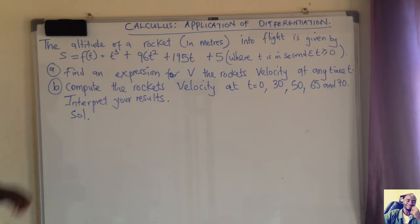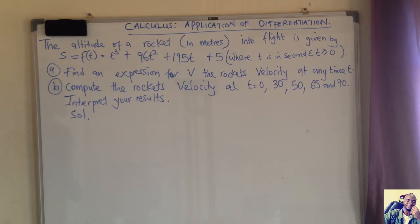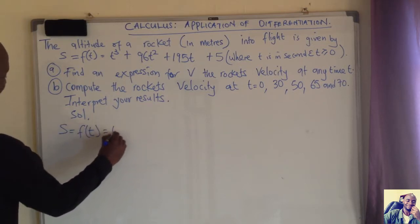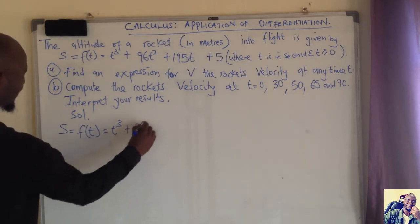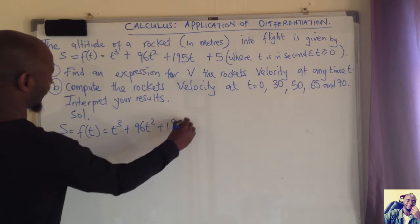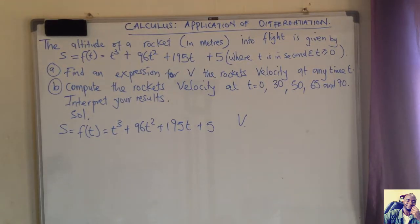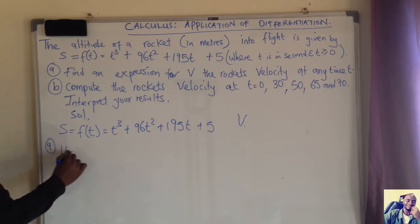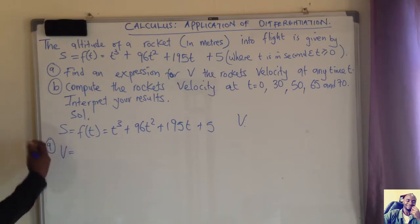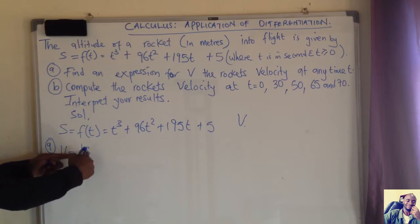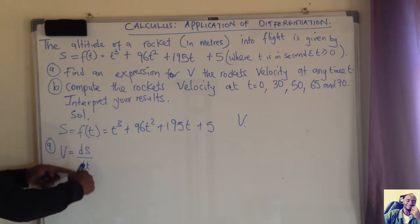We are given the displacement of the rocket in meters. Displacement, which is a function of t, is equal to t to the power 3 plus 96t squared plus 195t plus 5. Now we want to find v. We know that velocity is the rate of change of displacement, so velocity is equal to ds over dt, meaning we have to differentiate the equation for displacement with respect to time.